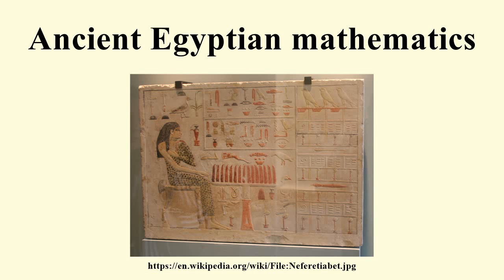The earliest true mathematical documents date to the XII dynasty: the Moscow Mathematical Papyrus, the Egyptian Mathematical Leather Roll, the Lahun Mathematical Papyri — which are part of the much larger collection of Kahun papyri — and the Berlin Papyrus 6619, all date to this period. The Rhind Mathematical Papyrus, which dates to the second intermediate period, is said to be based on an older mathematical text from the XII dynasty.